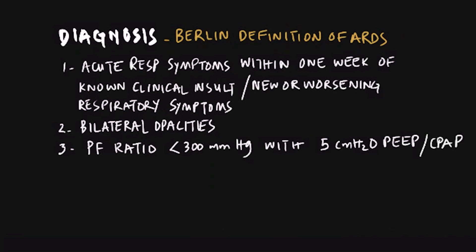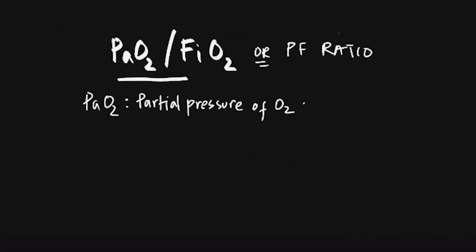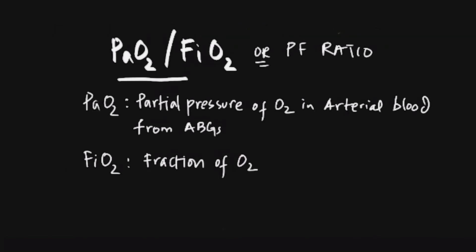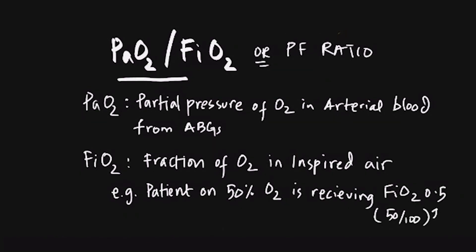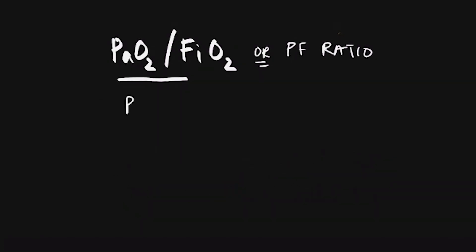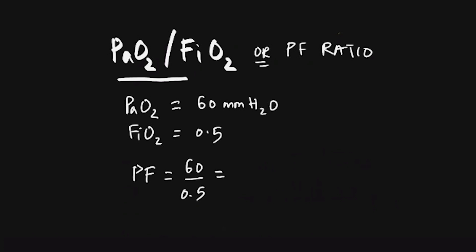PO2 is measured on ABGs and FiO2 is the fraction of oxygen in inspired air. For example, if you are giving 50% oxygen, the FiO2 will be 0.5. So if a patient has a PO2 of 60 mmHg and is receiving FiO2 of 0.5, the PF ratio will be 60 divided by 0.5, which equals 120 mmHg, indicating moderately severe ARDS.